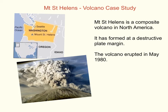Hello and welcome to your case study of a volcanic eruption. Our example is Mount St Helens, which is located on the west coast of North America in the state of Washington. It formed at a destructive plate margin and it erupted on May 18, 1980.